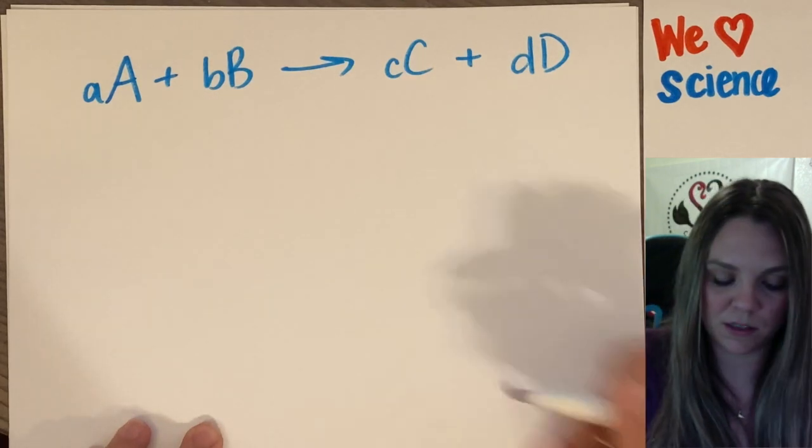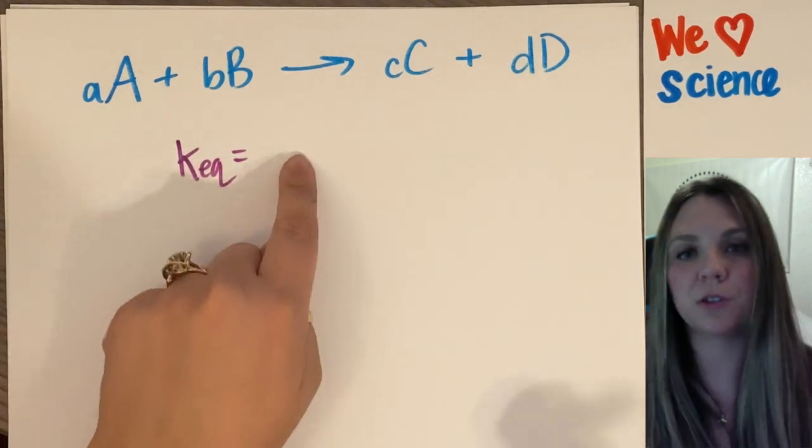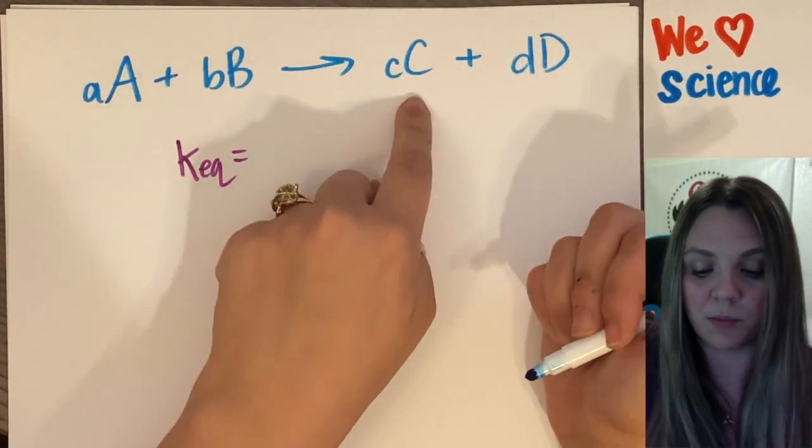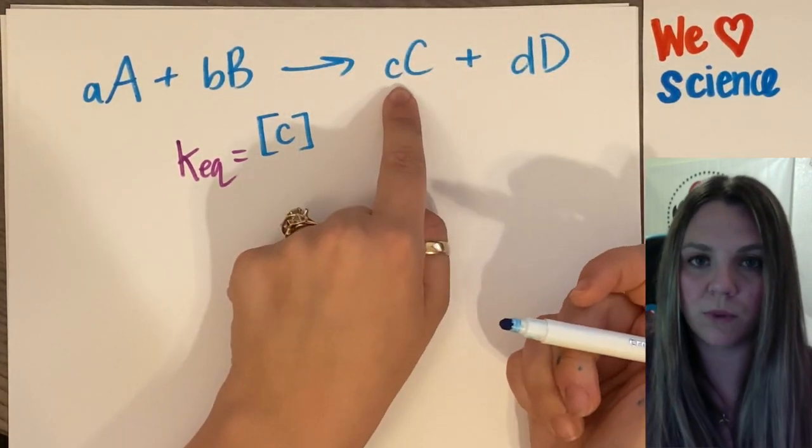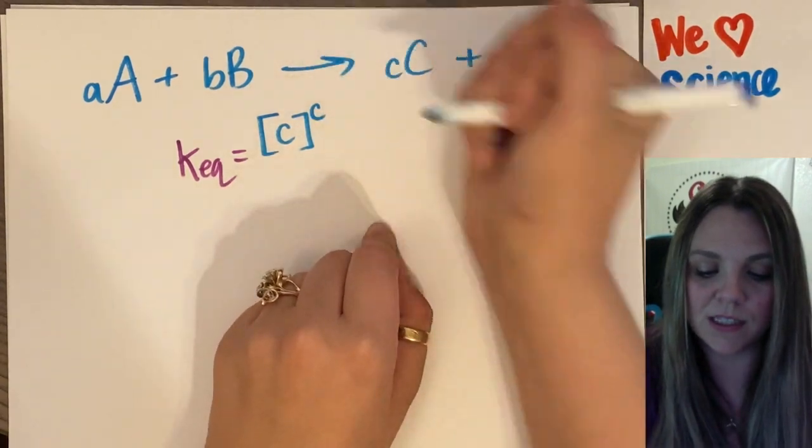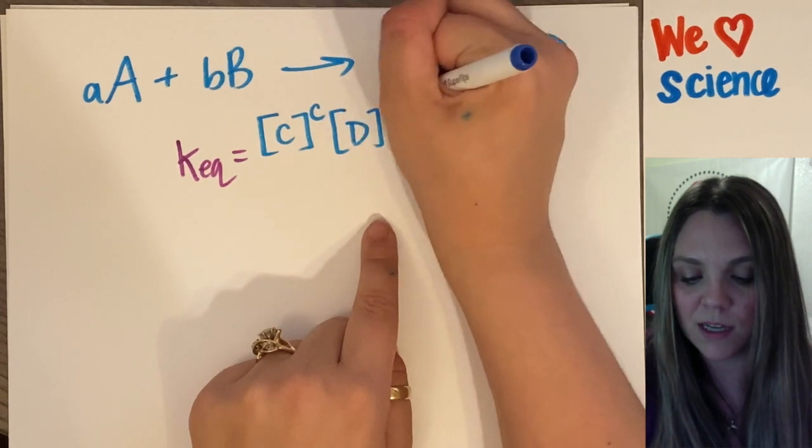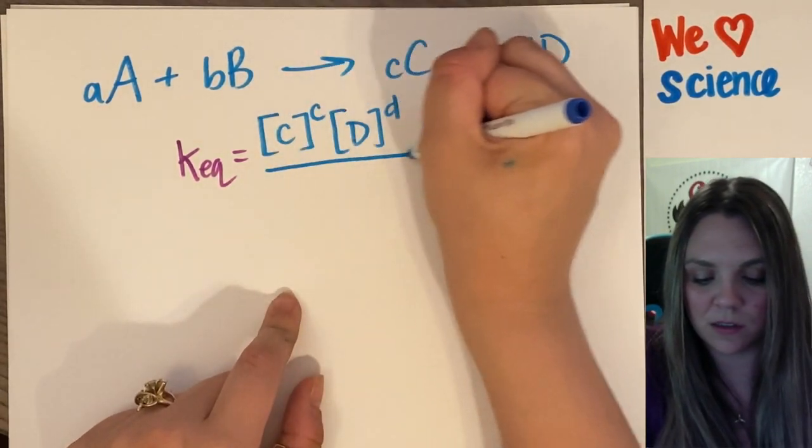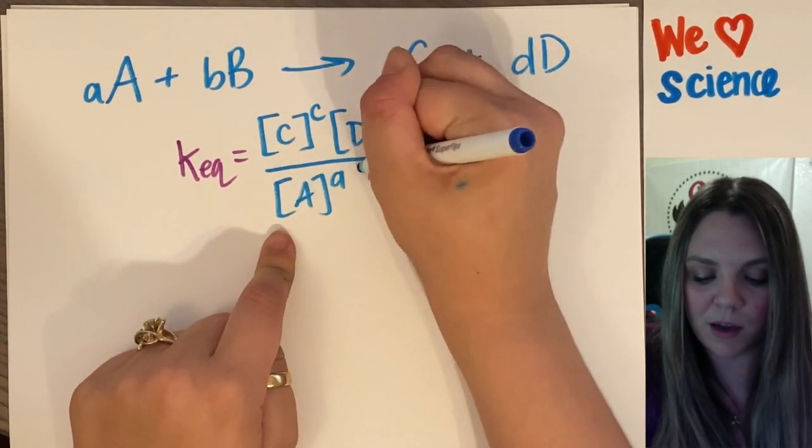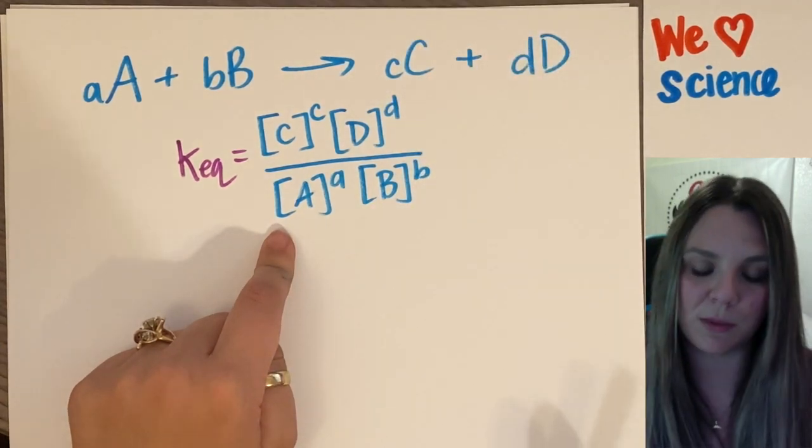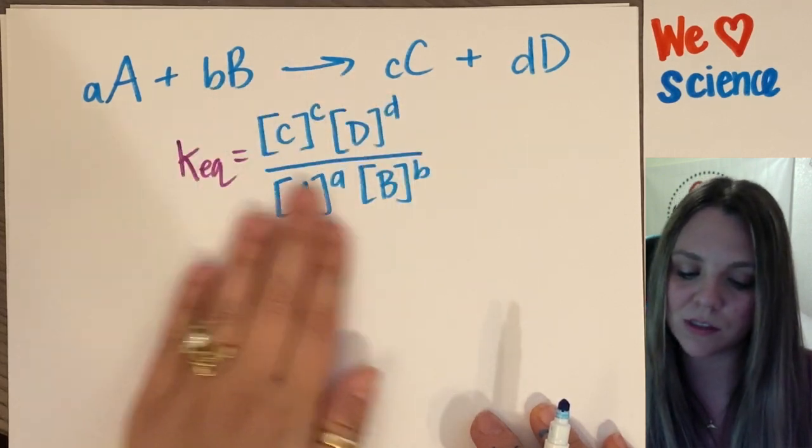And your K of equilibrium is going to be the concentration of your products over reactants. So my products is C raised to whatever power of my coefficient is, so C to the c power times the concentration of D raised to the d power, divided by the concentration of A to the a power times B to the b power. I promise this will be better when we look at an actual chemical reaction. This is just the generic one.